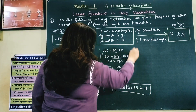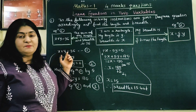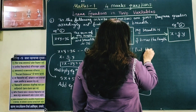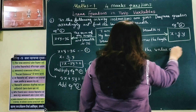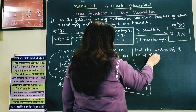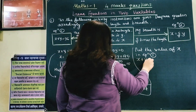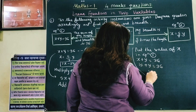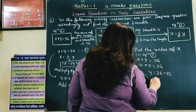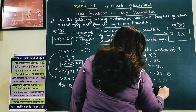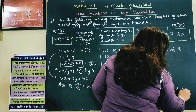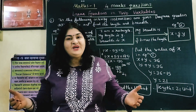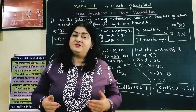Now I have found the breadth. To find the length, I substitute X equals 15 into equation 1: X plus Y equals 36. So 15 plus Y equals 36, giving Y equals 36 minus 15, which is 21. Therefore the length equals 21 units. Thus the length of the rectangle is 21 units and the breadth is 15 units.